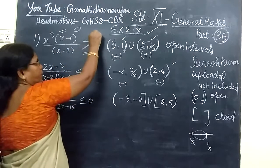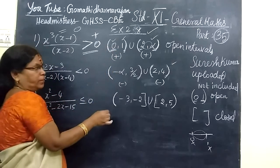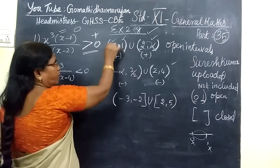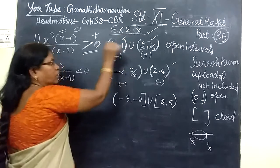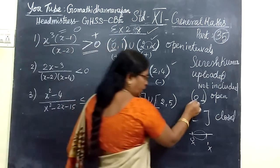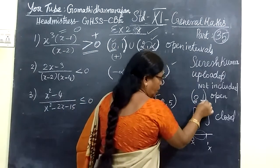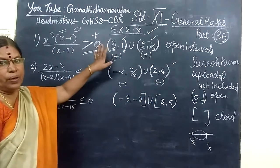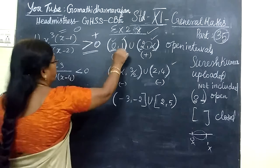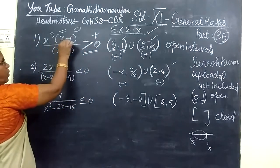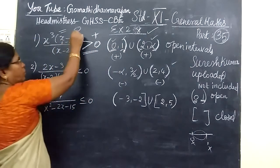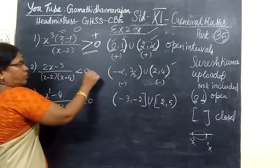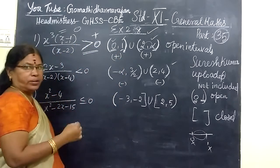Greater than zero means plus 1 only, so this limit is not satisfying. The value must be greater than zero — when we take only the open interval, this error limit will be considered. That is the open interval condition. Suppose we substitute 1: one minus one is zero, totally zero. But the condition must be greater than zero, so this also is not satisfying.